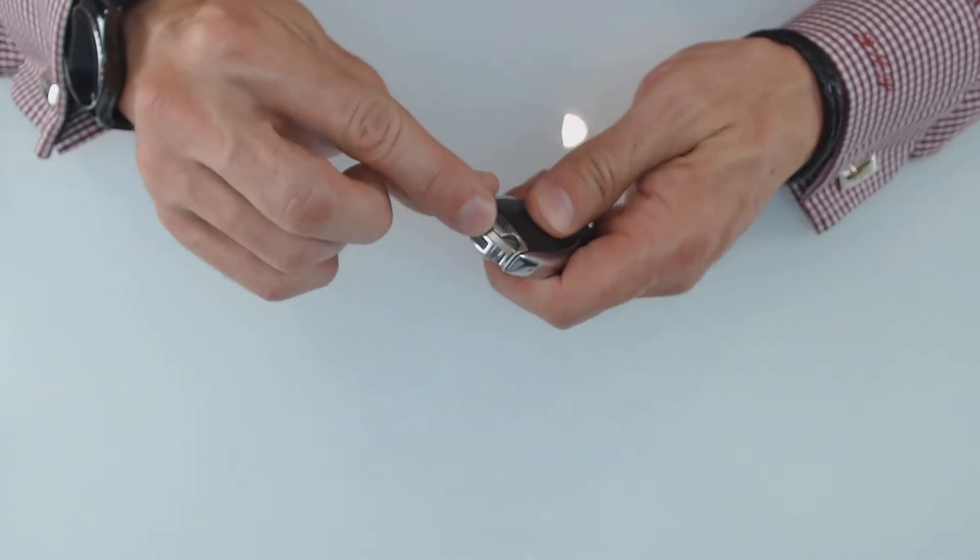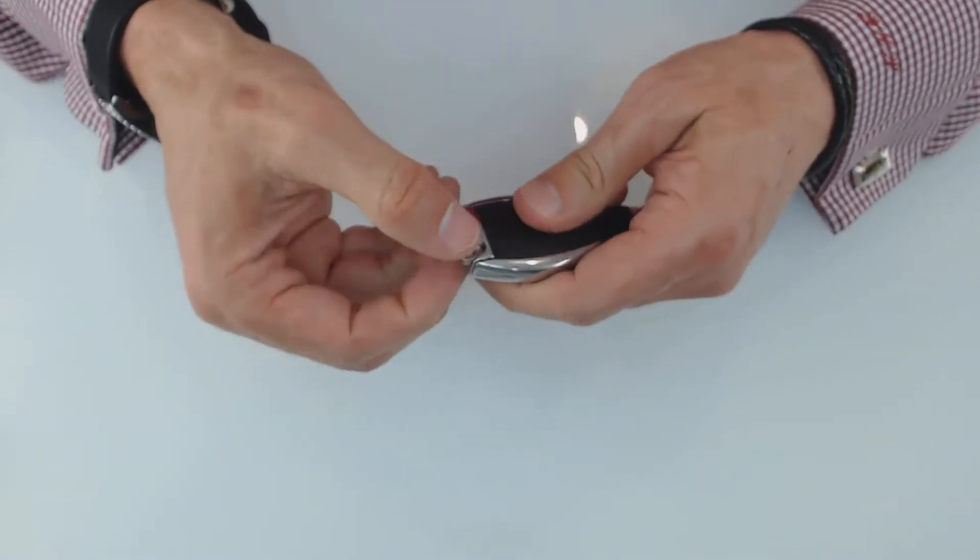First, what I want you to do is take the valet key out. Easy. Just pop this out.